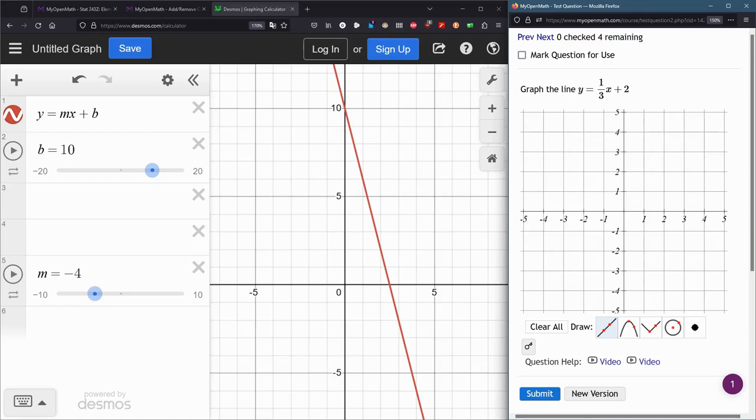Alright, graph the line 1 third x plus 2. So you need to use this first option that's already selected. If you accidentally choose one of these other options, this is called a parabola. We're not doing parabolas here. If you did a circle, you can clear everything out. You can't delete one thing, but you can remove everything. So you hit that clear button. We need the line. 1 third x plus 2. I'm going to start by clicking on the y-intercept right here at 2. And I'm just going to click somewhere else. This is not the correct line yet.